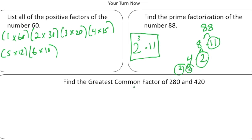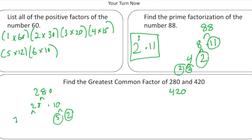Last but not least, we have to find the greatest common factor of 280 and 420. For 280: 280 is 28 times 10. 10 is 5 and 2, both prime. 28 is 7 and 4. And 4 is 2 and 2. So the prime factorization of 280 is 7 times 2 times 2 times 5 times 2.